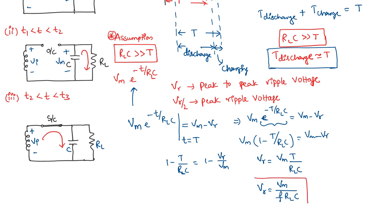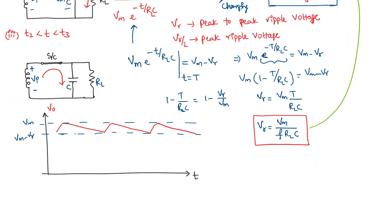We have found the relationship between the peak-to-peak output ripple voltage and the peak input voltage. This is valid under the assumption that RLC is much greater than T, so discharge time is approximately equal to the total time period. Since Vr is very small under this assumption, we can take Vm over RL to simply be IDC, so Vr can be written as IDC over (F times C).